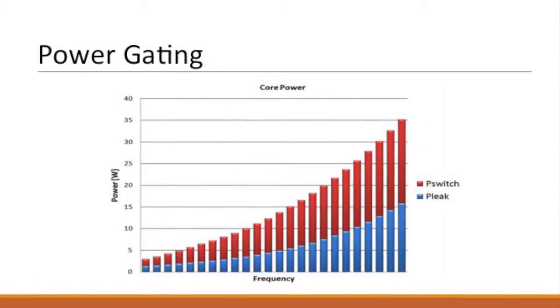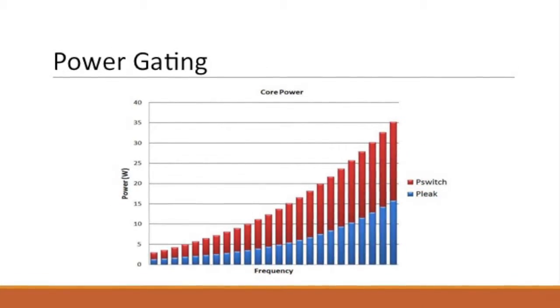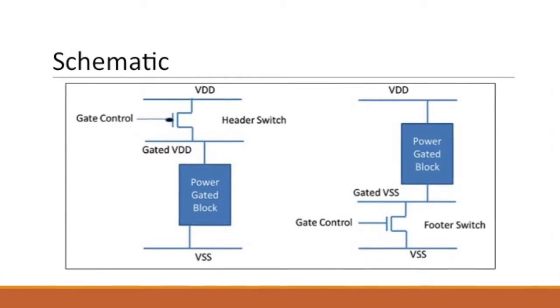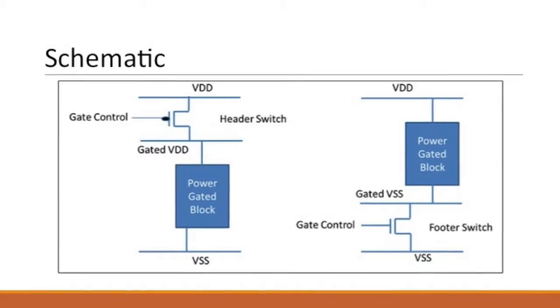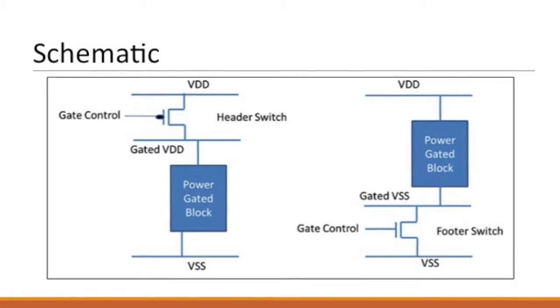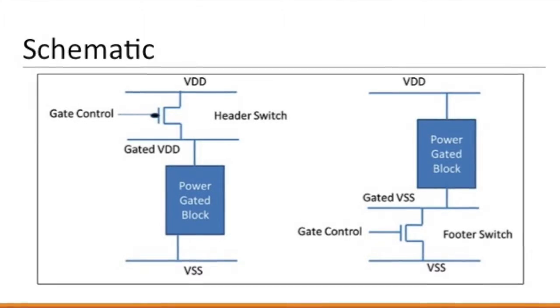Power gating is one of the most effective ways of minimizing leakage power. Now we are going to show how power gating is implemented. It is important to know that this technique can be performed in two ways: footer way using NMOS and header way using PMOS, both having the same applications. In the next slides, we are going to explain how power gating works and which are its modes.